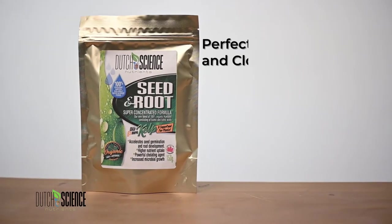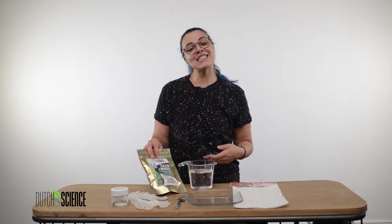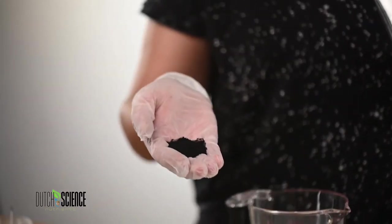We're going to be starting with our seed and root formula. It's 100% organic and it has six times the kelp than our original Humates blend, and that's to help germinate the seeds a little bit quicker and help promote healthy root growth.